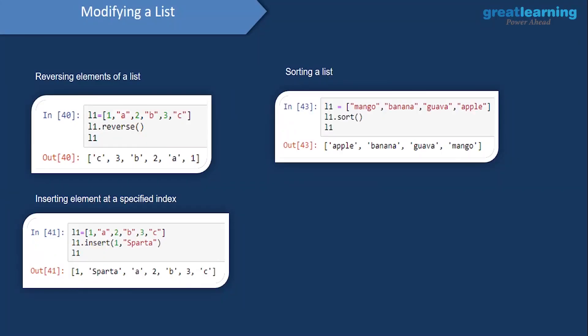There are more modifications we can perform on a list. If we want to reverse the elements present in a list — for example in L one — all we have to do is use the reverse method. We type L one dot reverse, and when we print this out, the elements are printed in reverse order.